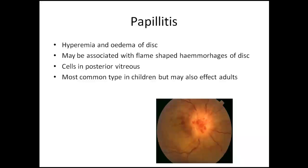Papillitis means inflammation of the optic disc which we can see ophthalmoscopically. Because of inflammation, the disc margins are blurred — you cannot see the circular optic disc margin clearly. What you see is swelling of the optic disc with a feathery-like structure due to edema. Other findings include flame-shaped hemorrhages on the optic disc, tortuous and fully filled vessels, and cells in the posterior vitreous. This is the most common type in children.